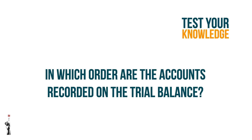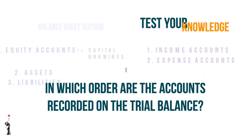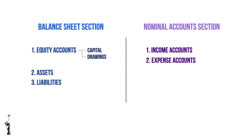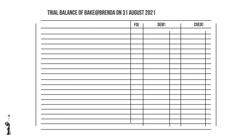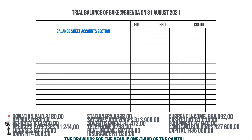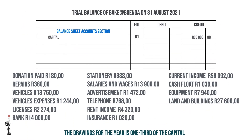Let's start with the balance sheet accounts first. Capital is recorded on the credit side. Next up is drawings, but this one is a bit more tricky because we didn't give you the balance — what do you think the balance for drawings is?